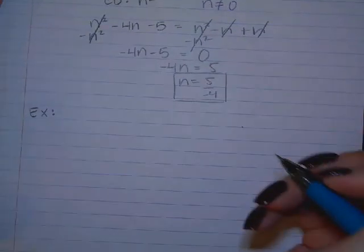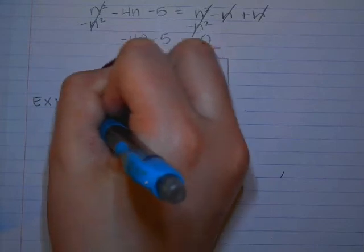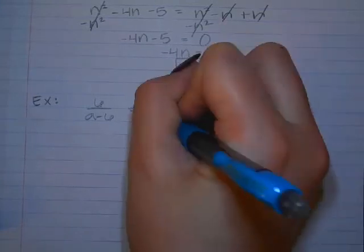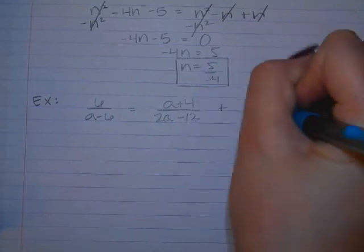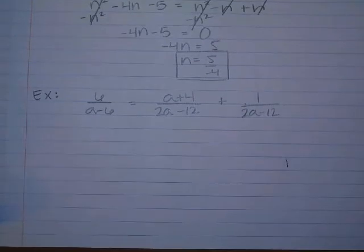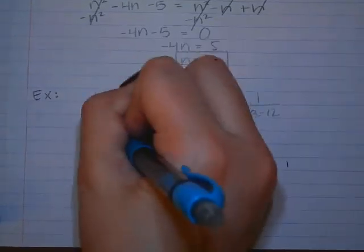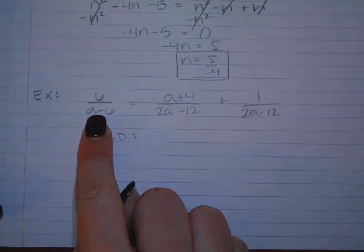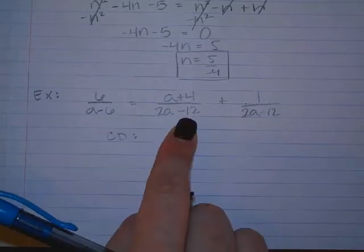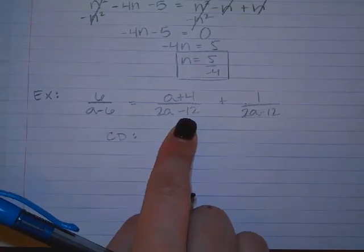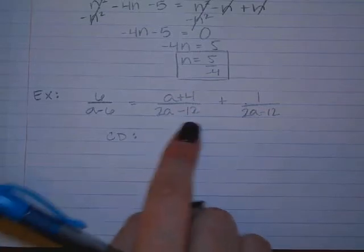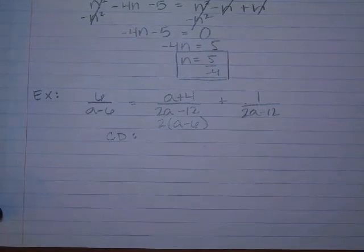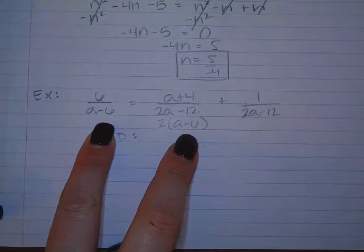Okay, let's try. I have two more for us. I just want to make sure we can do some that have denominators that are not quite that nice. So 6 over A minus 6 equals A plus 4 over 2A minus 12 plus 1 over 2A minus 12. Common denominator. What about the A minus 6? Wait, are these the same? We need to factor this. So if we factor 2A minus 12, what do we have? 2 times A minus 6. So Gunner was right. I don't know if that was an accident or if that was on purpose. But it's the factored form. So they're actually the same.